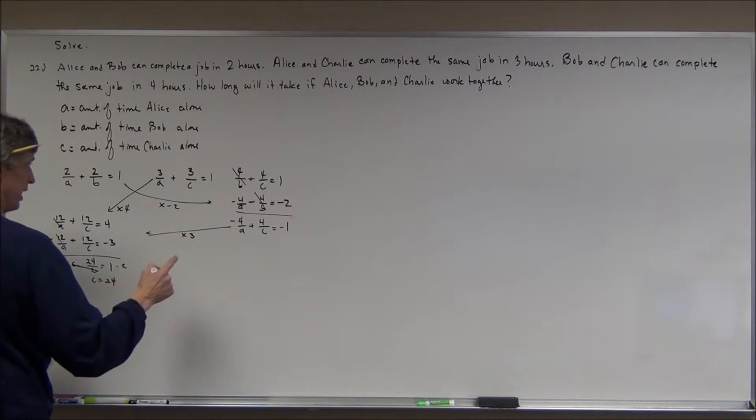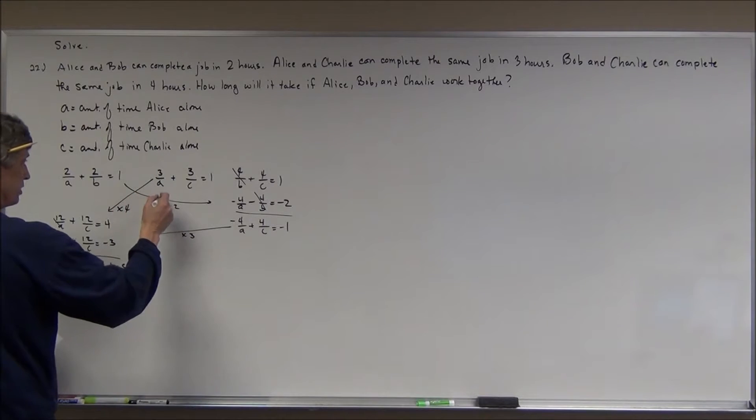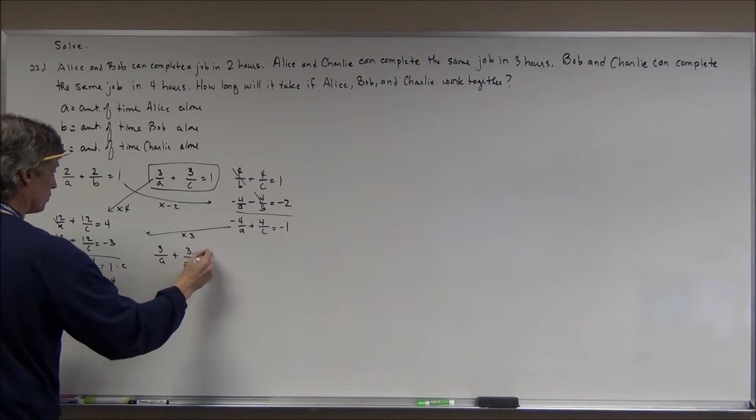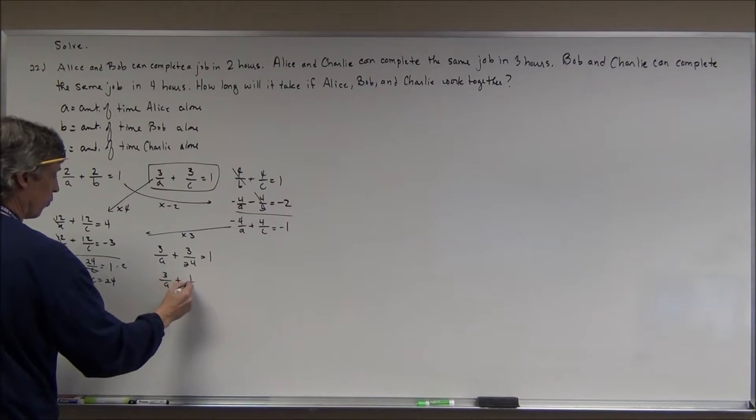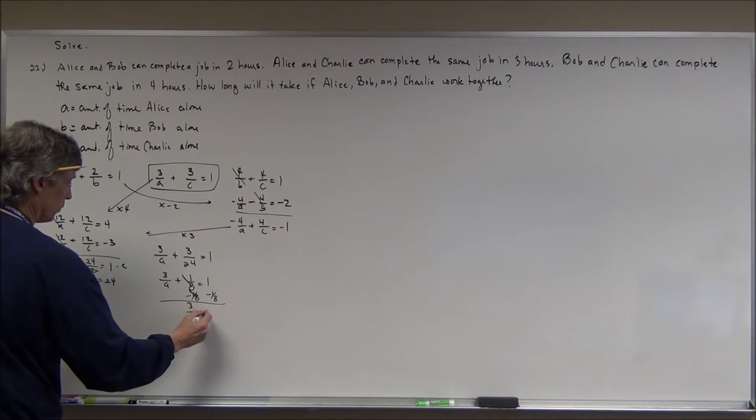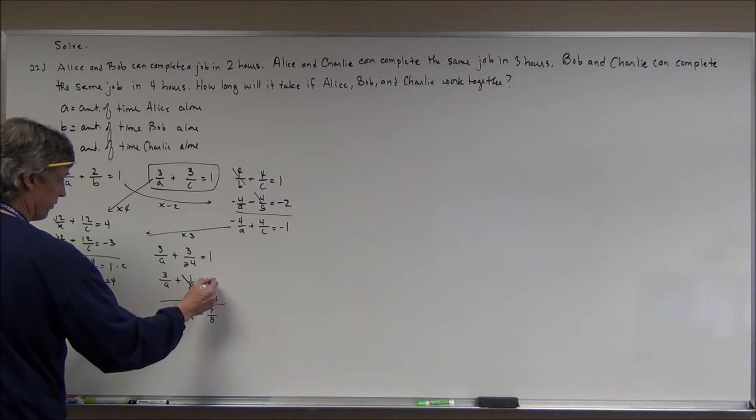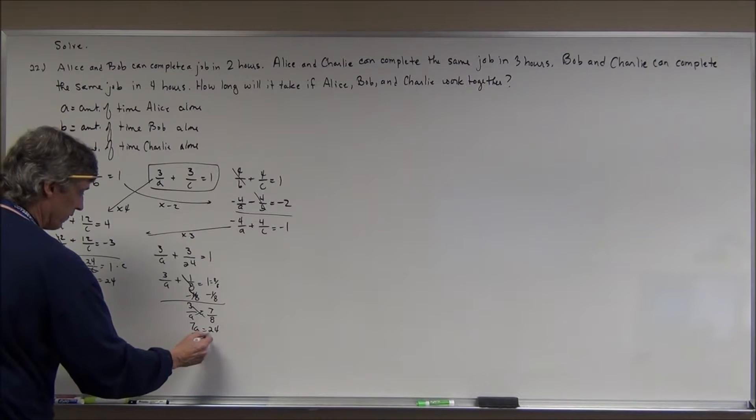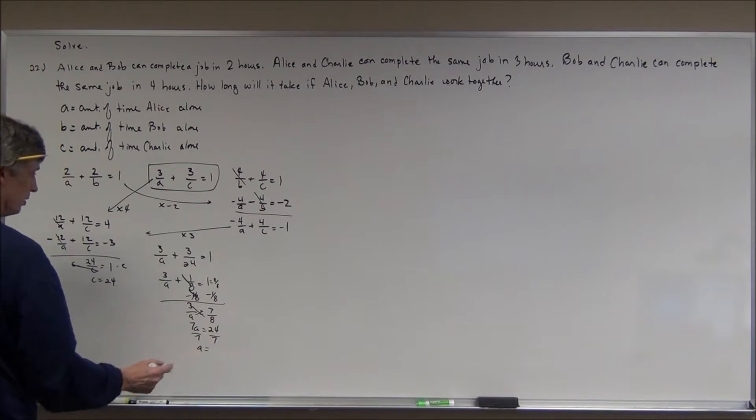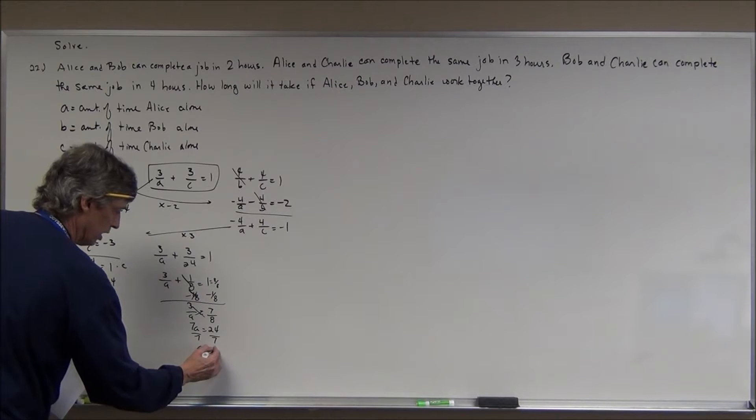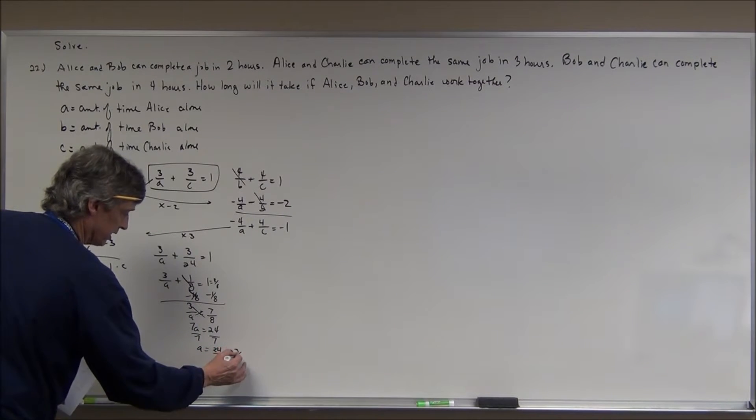Now, I can take the 24. Let's say I go back to this equation right here. I have 3 over A plus 3 over C which is 24 equals 1. 3 over A plus, this is 1 eighth equals 1. I'm going to subtract 1 eighth from both sides. And I get 3 over A is equal to 7 eighths because I have to get a common denominator. This is 8 eighths. And then I can cross multiply. I get 7A equals 24. Divide by 7, I get A is equal to 24 sevenths.